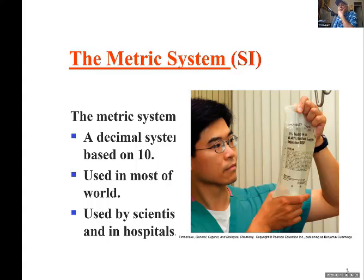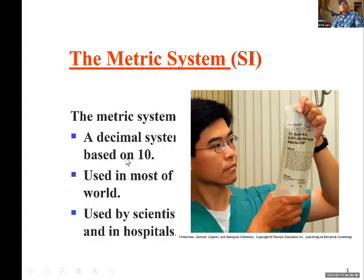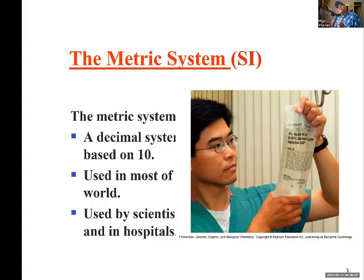The metric system, which is used by most countries and in scientific publications, is based on 10. That means one meter equals 10 decimeters, and one decimeter equals 10 millimeters. You see factors of 10 in the different units of the metric system.